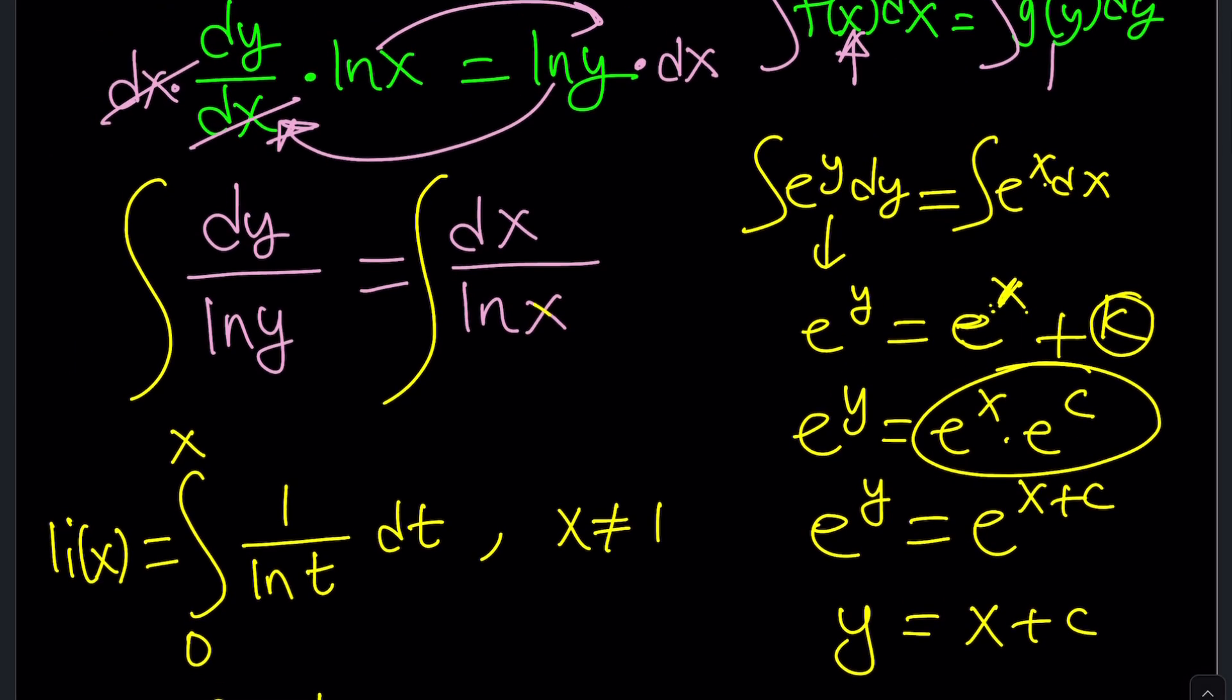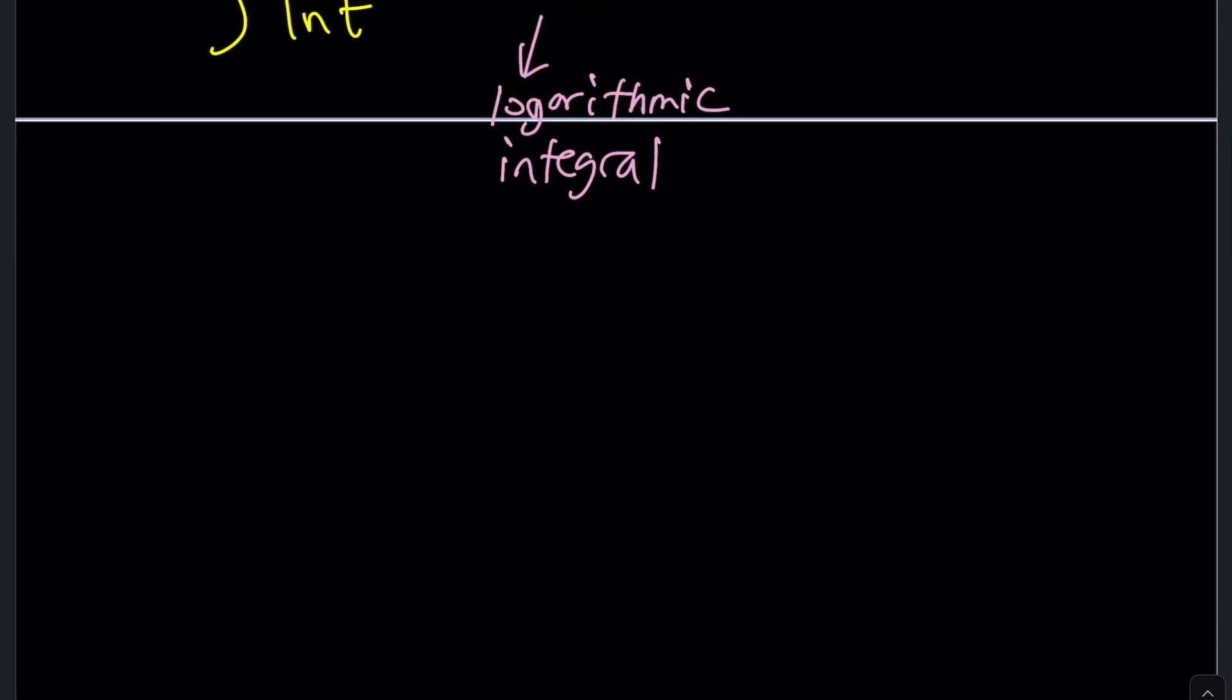So we do it on both sides and that gives us the following: li of y equals li of x and don't forget the constant. Of course, you always have to use the constant. But how do we solve for y if you don't know what c is or if c does not equal 0?